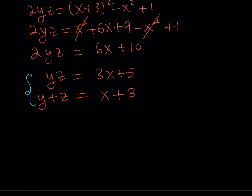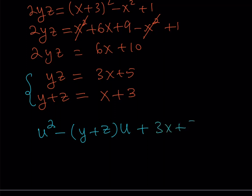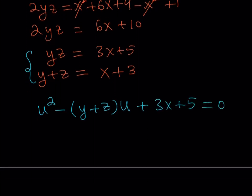Using Vieta's formulas in reverse: if you know the sum and product of the roots, you can write the equation. So I'll use a variable u whose roots are y and z. The sum of the roots goes in with a negative sign, and the product of the roots becomes the constant term, which is 3x plus 5. So we have an equation in u whose roots are y and z.